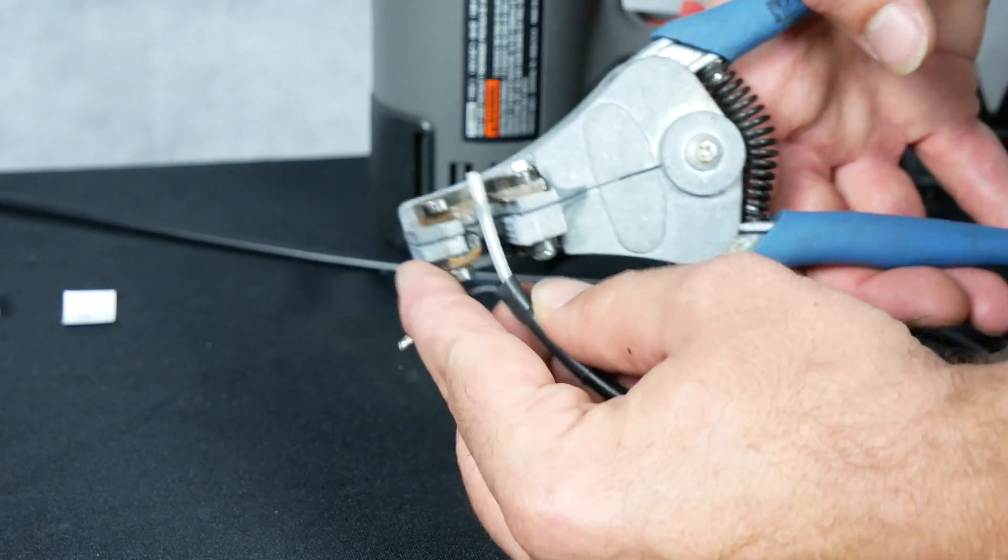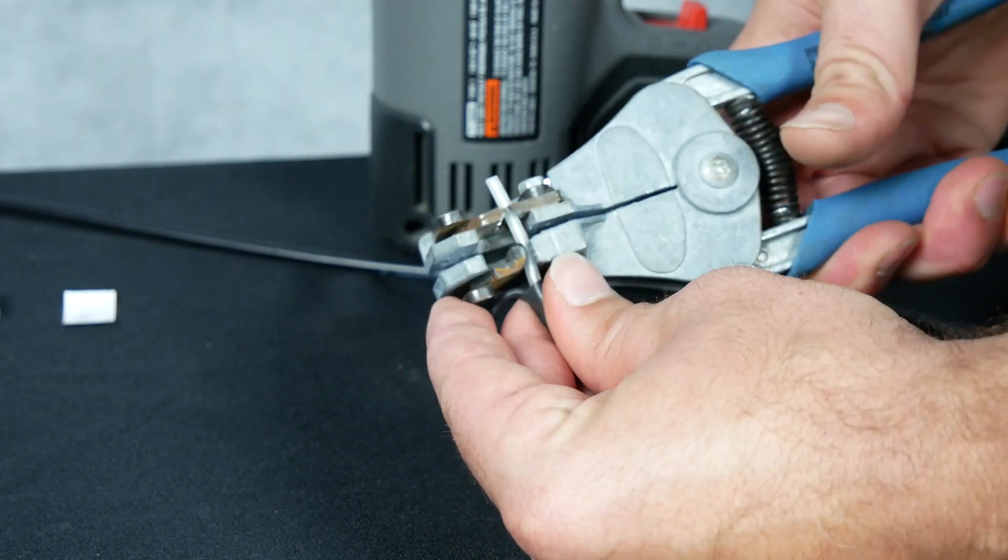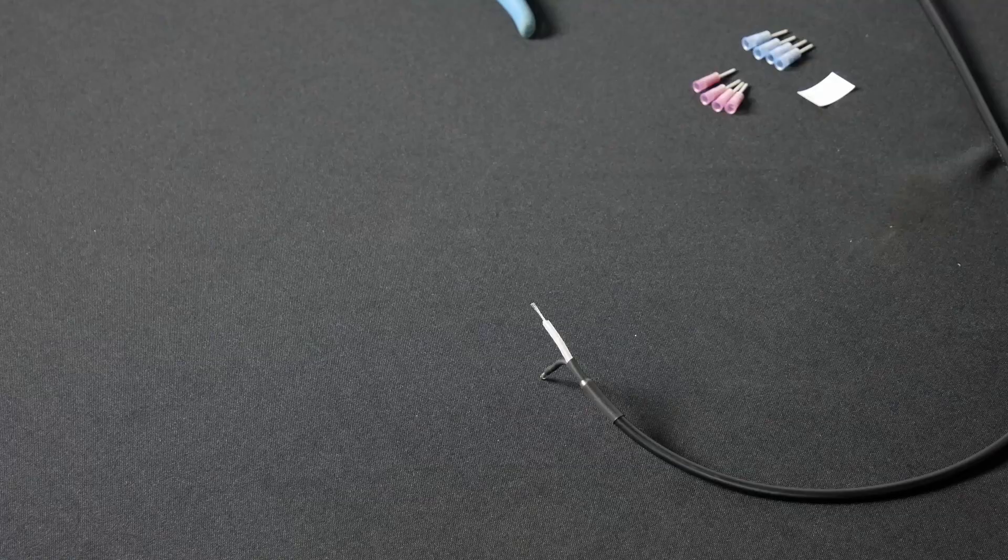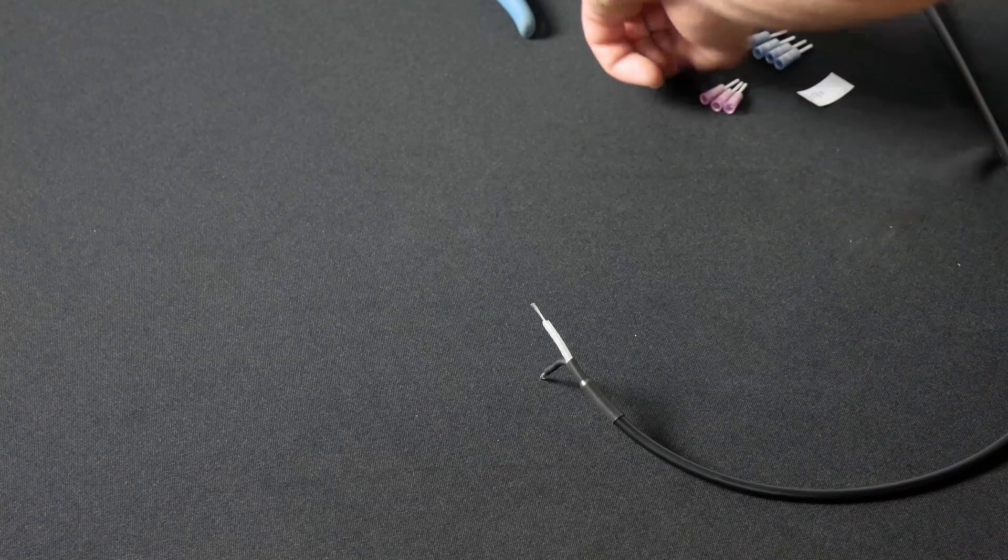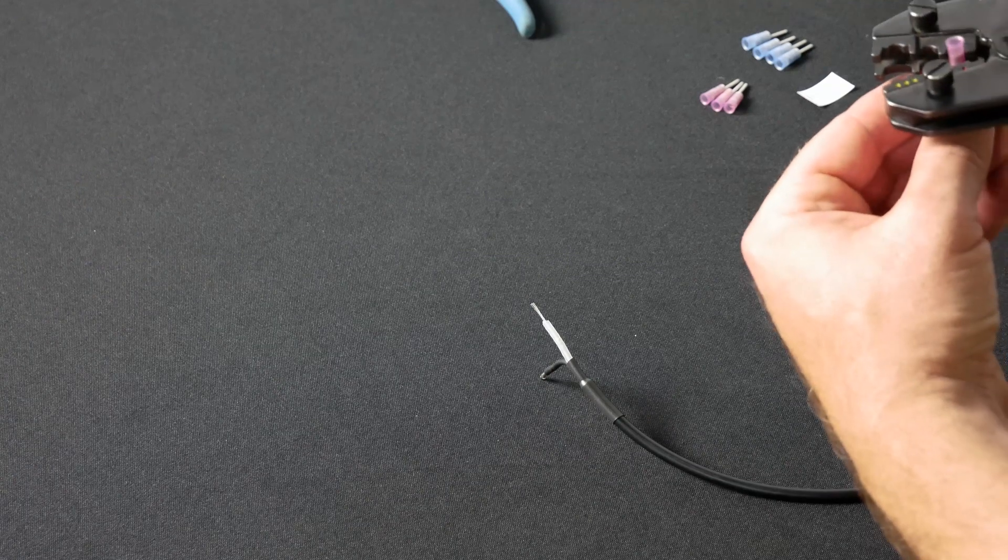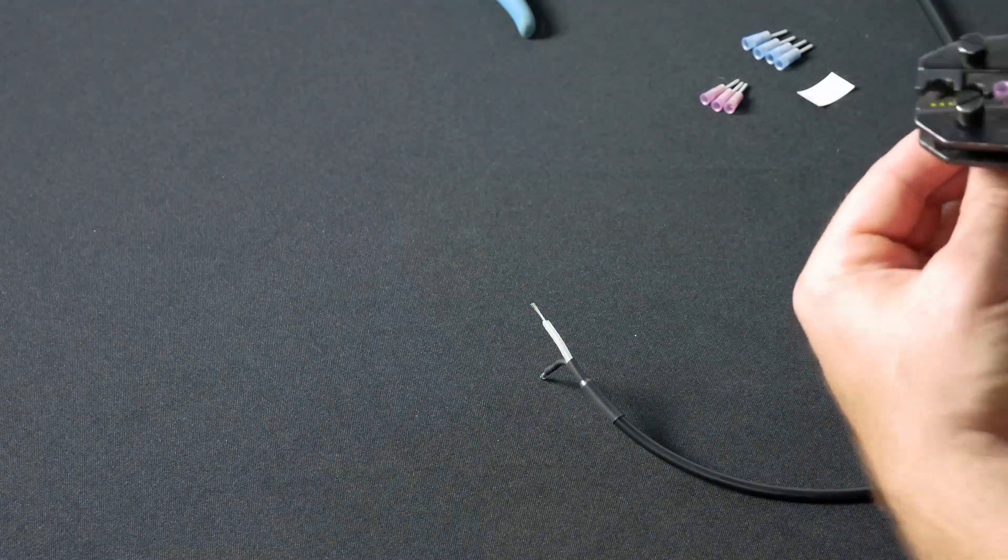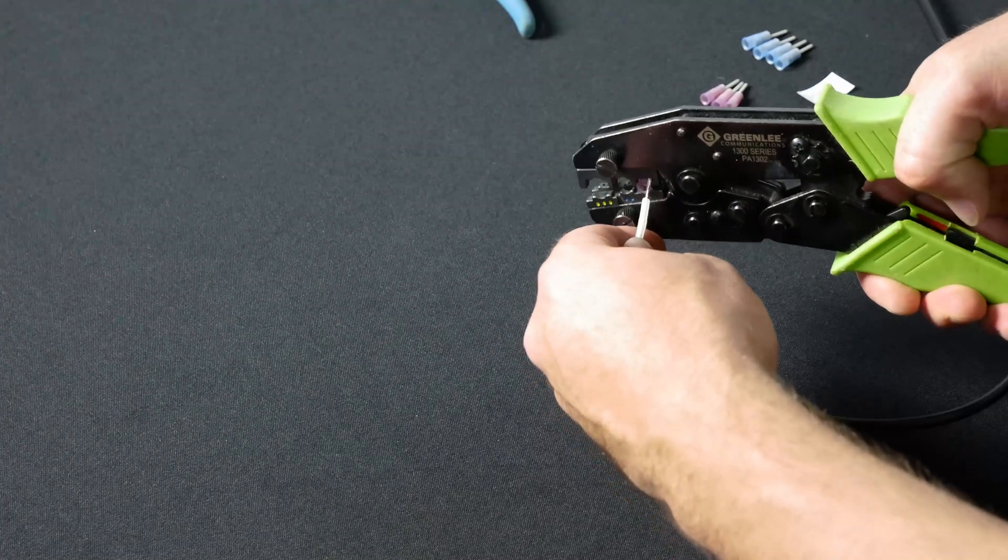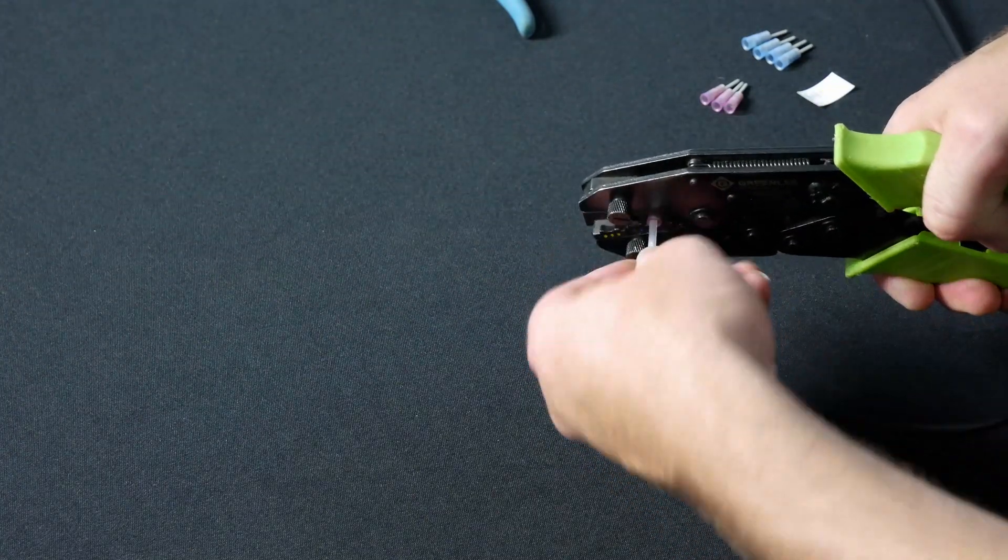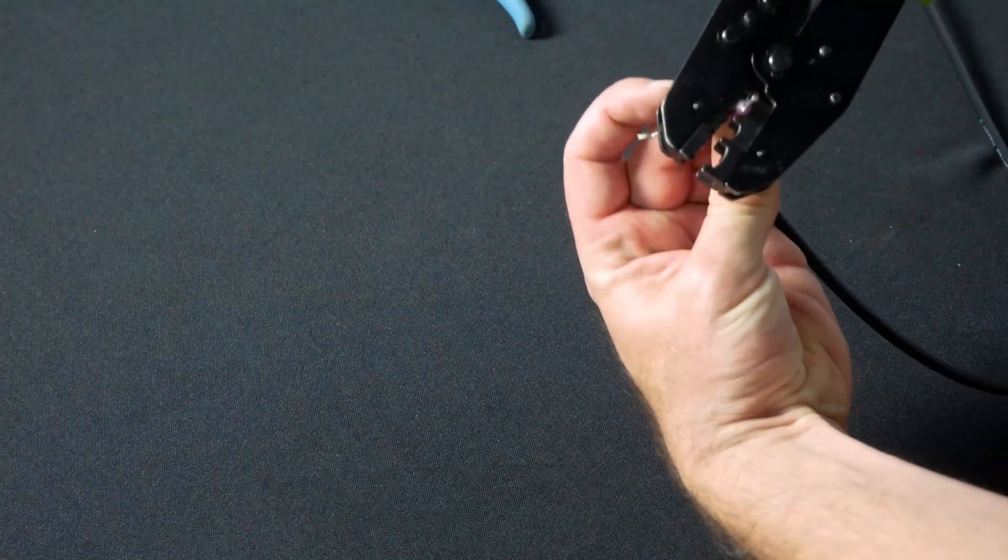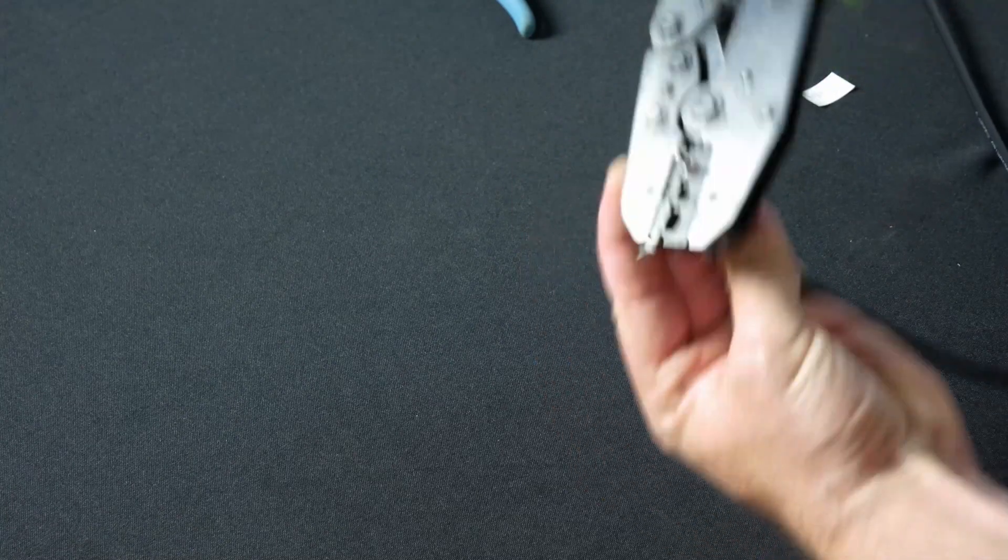Next, strip back the center conductor of the coax so you have enough to crimp your ferrule or terminal onto. Then crimp on your terminal. You want to select the proper size terminal for the conductor you are using. The center conductor generally uses an 18 to 22 pink or red terminal. Make sure you can see the wire through the sight hole at the end of your terminal.